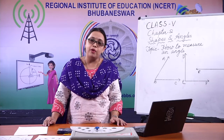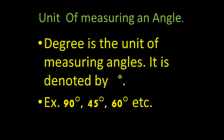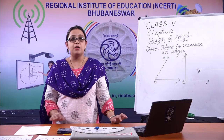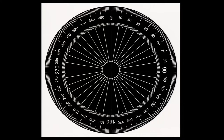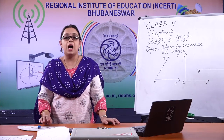As I mentioned in the first session, degree is the unit of measuring an angle. We can express the measure of an angle as 90 degree, 45 degree, 60 degree, 32 degree, and so on. A complete angle represents 360 degrees. Look at the picture carefully — the whole circle is divided into 360 parts, and each part represents 1 degree. So, how do we measure an angle?